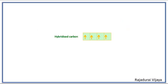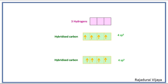Now we see how the C-C bond and the six C-H bonds are forming. After hybridization, there are four sp3 hybridized orbitals on one carbon atom. We see how the C-C bond forms as these orbitals overlap.